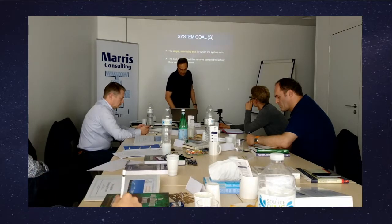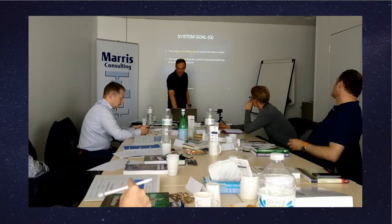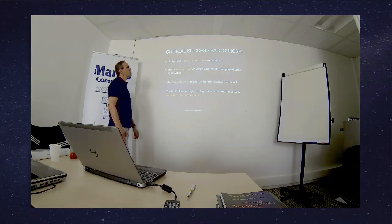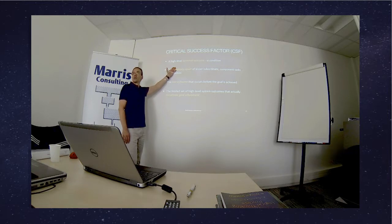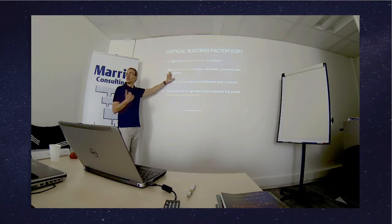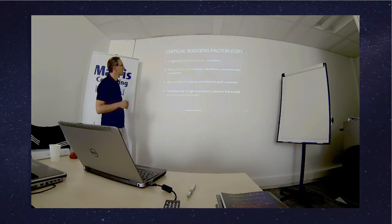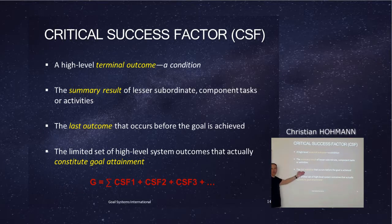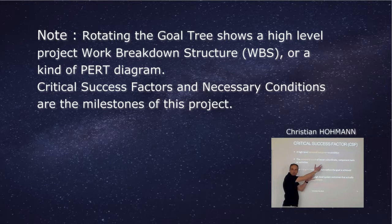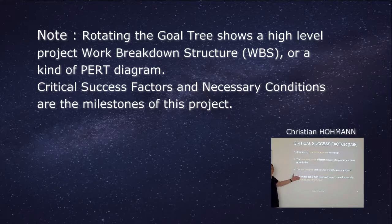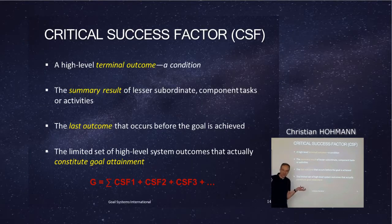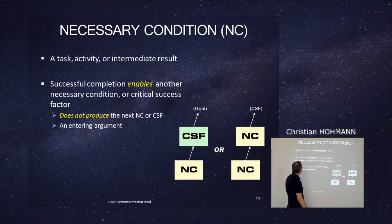Either the owner himself or somebody having authority decides what the goal is. Then we go to the critical success factors: they are very high-level terminal outcomes — necessary conditions with a special status. They are the summary result of the underlying necessary conditions, the very last milestone before reaching the goal. It's a very limited set of high-level system outcomes, so we have no dependency on too many critical success factors.